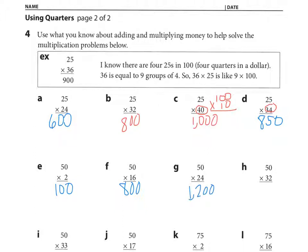Looking at H, 50 times 32. What's half of 32? 16. 16 times 100 is 1600.